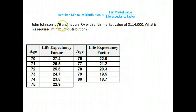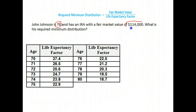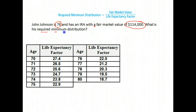Here's John Johnson. At 76, he has an IRA. Here's his age. The value of the IRA is $114,000. And again, they want to know what's his required minimum distribution. So again, we just follow the chart.